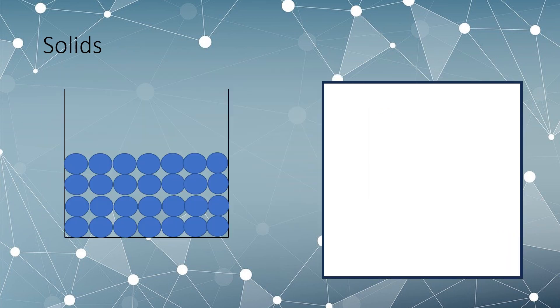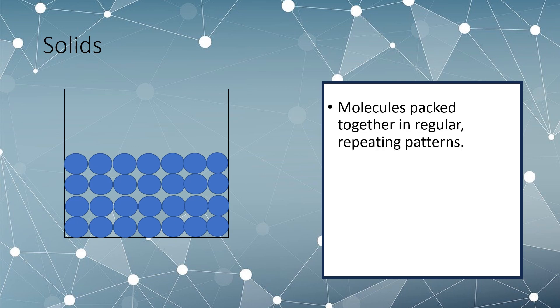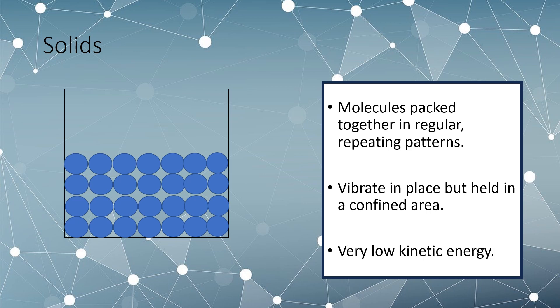Let's start off with solids. In our diagram the circles represent either particles or molecules. In solids these molecules are packed tightly together in regular repeating patterns. They can vibrate in place but are held in a confined area and move very little.